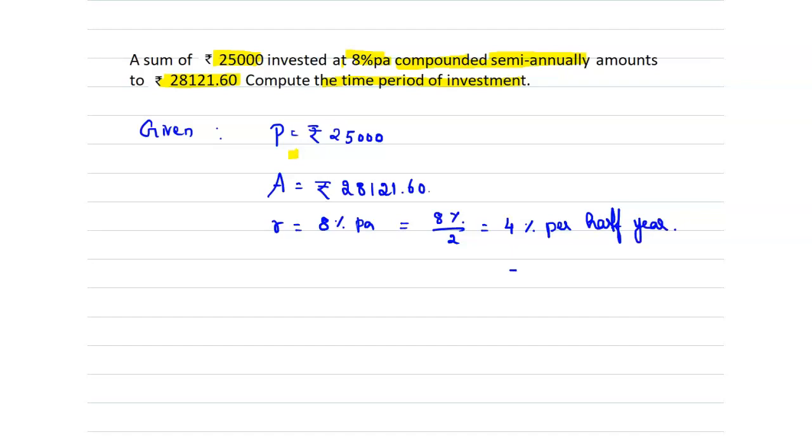Now we want to find the time period of investment. In which time period will 25,000 amount to 28,121.60 rupees at 4% rate of interest per half year?